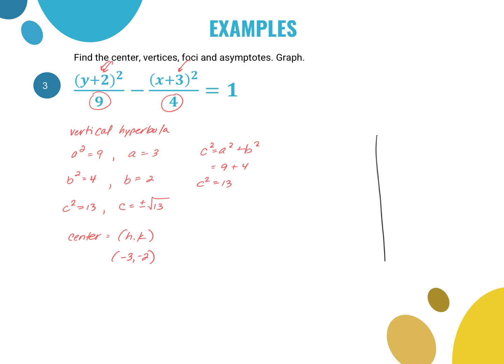For the center, I know it's at (h, k). Remember, h goes with x — it's the opposite sign of what's there — so h = −3. The k value is −2. So my center is at (−3, −2). Since a = 3 and it's vertical, I go up 3 and down 3 from center: up 3 from −2 gives y = 1, and down 3 gives y = −5. So my vertices are at (−3, 1) and (−3, −5).